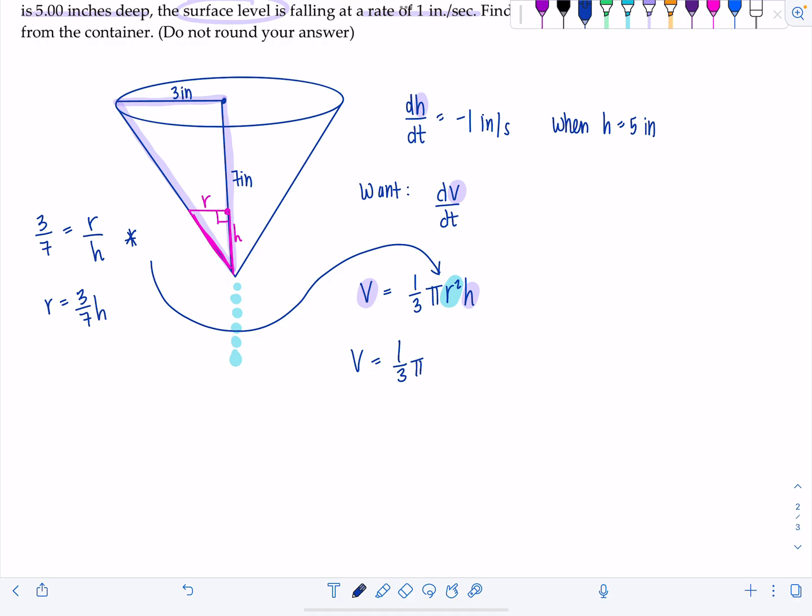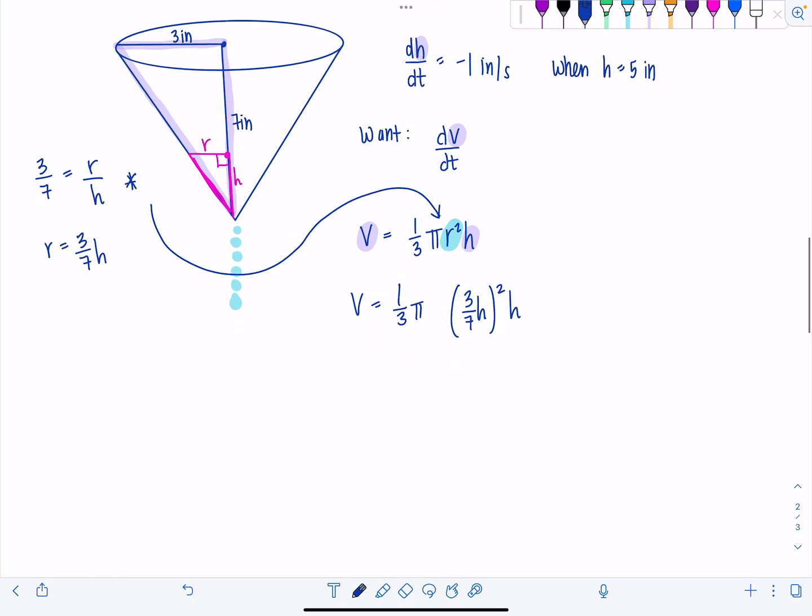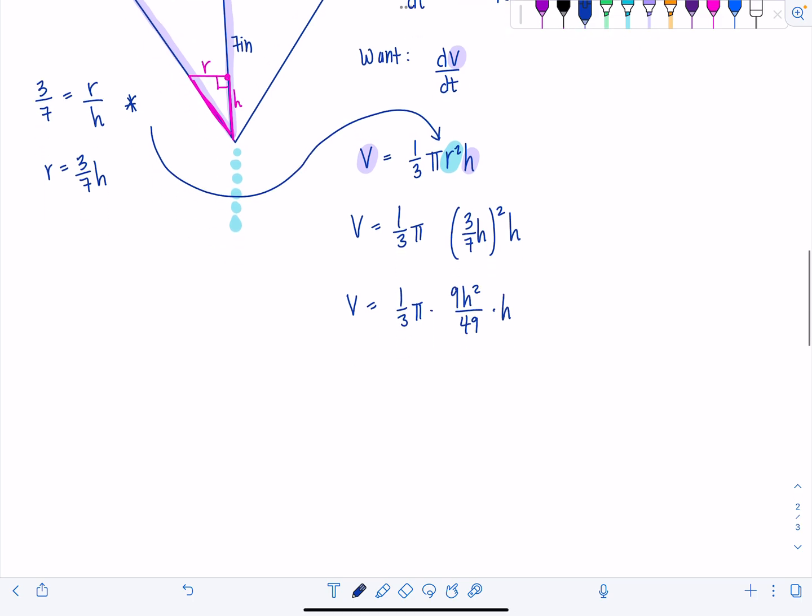Let's plug that back in. So V is one third π. Instead of r squared, I'm going to have three sevenths h squared times h. Let's clean this sucker up. So V is one third π times 9h² over 49 times h. And then that means V is 3π over 49 h³.